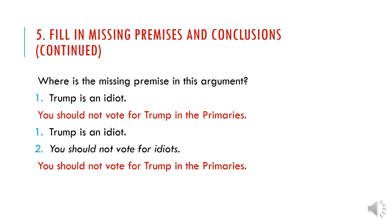What about the argument: 'Trump is an idiot, you should not vote for Trump in the primaries'? This is an argument where a damning premise is being left out. It might sound as though the only premise leads to the conclusion, however I can accept that premise and deny the conclusion — because there's nothing saying I should not vote for an idiot. Perhaps I want to vote for Trump for some reason, perhaps I'm a large oil tycoon who wants someone ignorant of my industry's activities, or maybe I think all candidates are idiots.